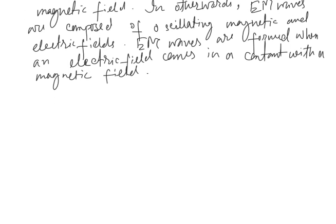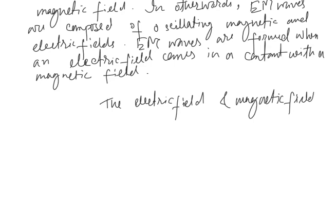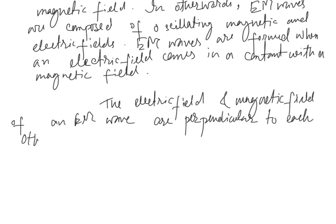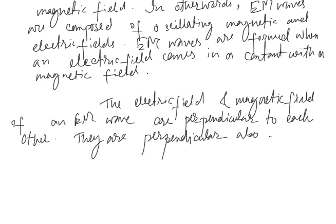They are hence known as electromagnetic waves. The electric field and the magnetic field of an EM wave are perpendicular to each other, and they are also perpendicular to the direction of the EM wave.